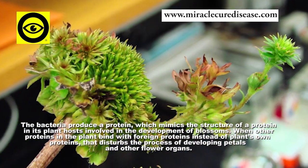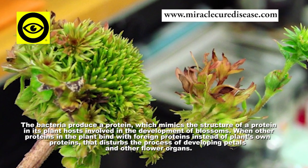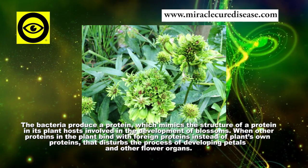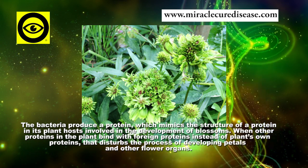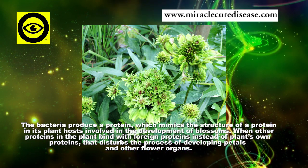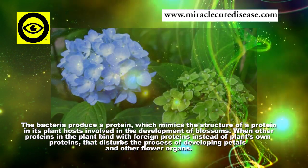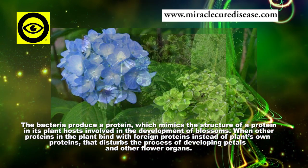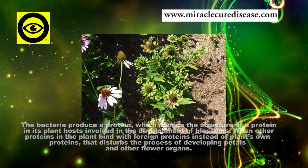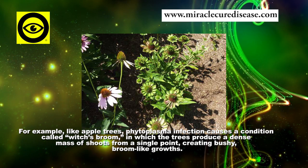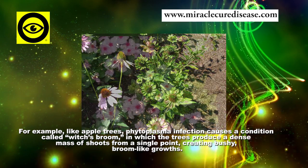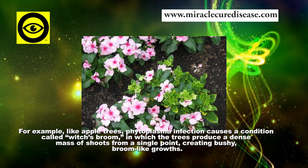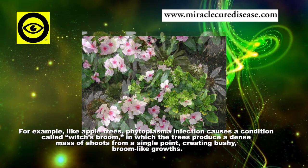The bacteria produce a protein which mimics the structure of a protein in its plant hosts involved in the development of blossoms. When other proteins in the plant bind with these foreign proteins instead of the plant's own proteins, it disturbs the process of developing petals and other flower organs.